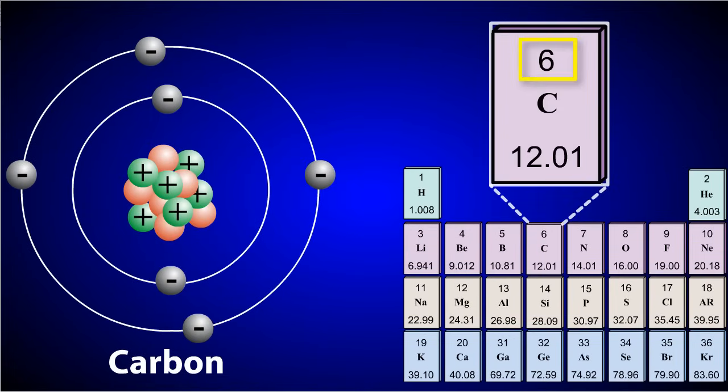The number that appears above the element symbol is called the atomic number. The atomic number tells you the number of protons that are in the nucleus of that atom. So, in the case of carbon, you can see that it has six protons in its nucleus.